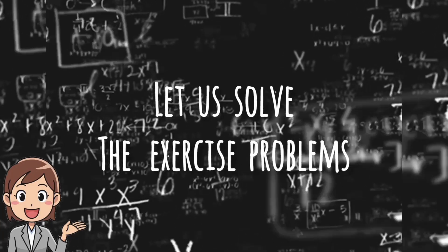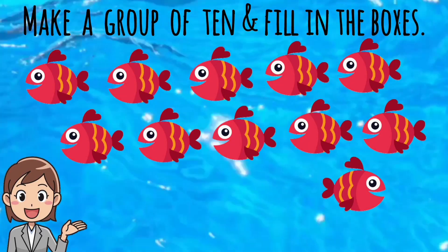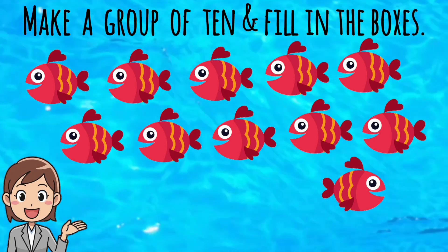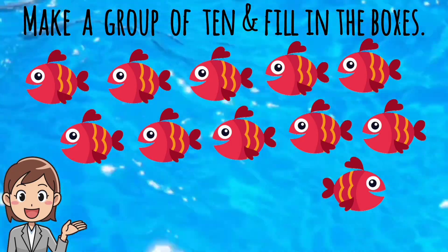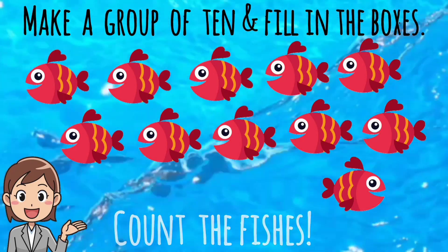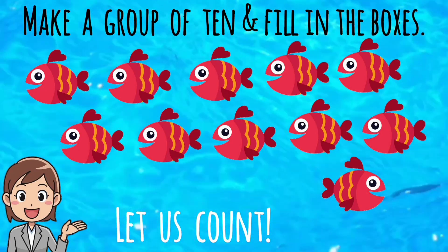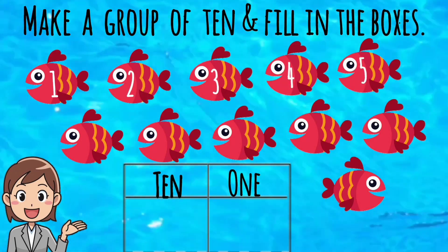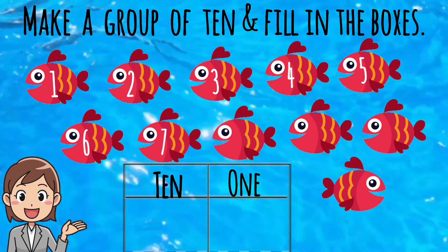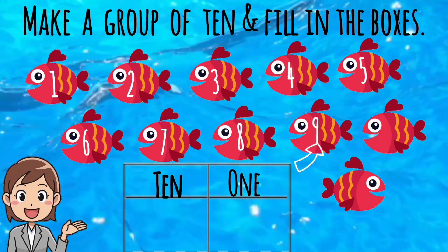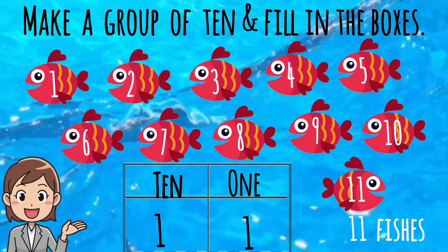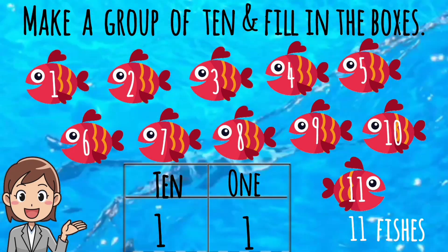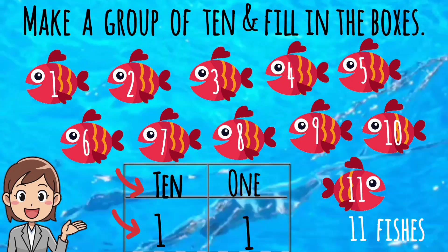Students, let us solve the exercise problems. Read this question: make a group of ten and fill in the boxes. First, you have to count the fishes. Come on students, let us count: 1, 2, 3, 4, 5, 6, 7, 8, 9, 10, 11. Yes, you are correct — 11 fishes. You know very well. Eleven contains one ten and one one.